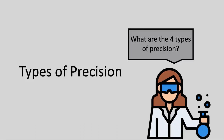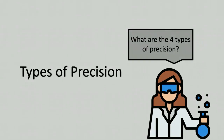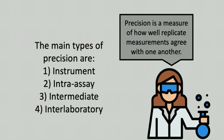This video will focus on precision and describe four main types of precision. At its core, precision is a measure of how well replicate measurements agree with one another. You might think of precision only as how well you can repeat a process in the lab and come out with the same results, but that is only one type of precision. This video will outline four main types of precision.